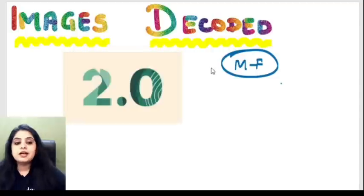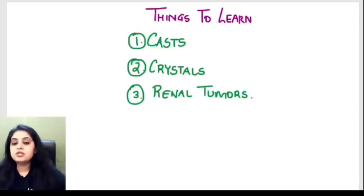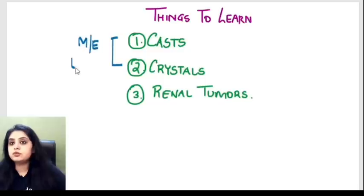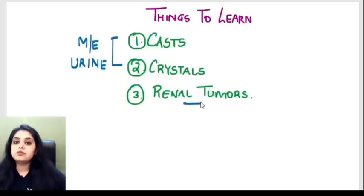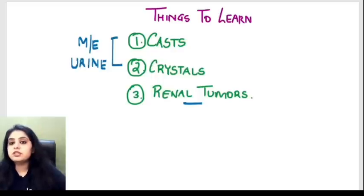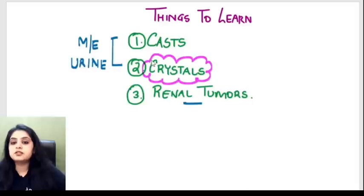What do we have to learn today? We'll cover microscopic examination of the urine with one or two instruments, and then images of renal tumors. Let's begin without any delay. The first things I'm starting with are the different crystals you can find in the urine. We'll go through them one by one and do a summary table at the end.